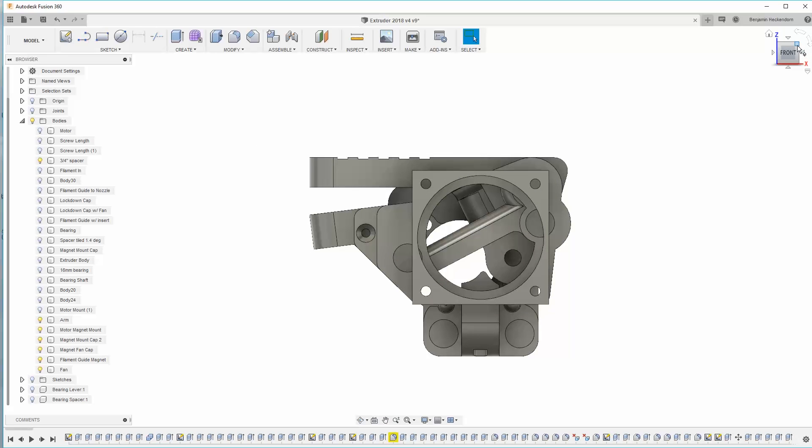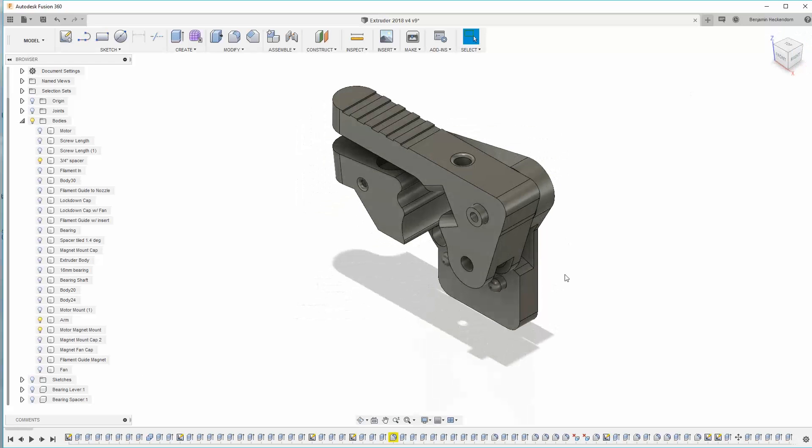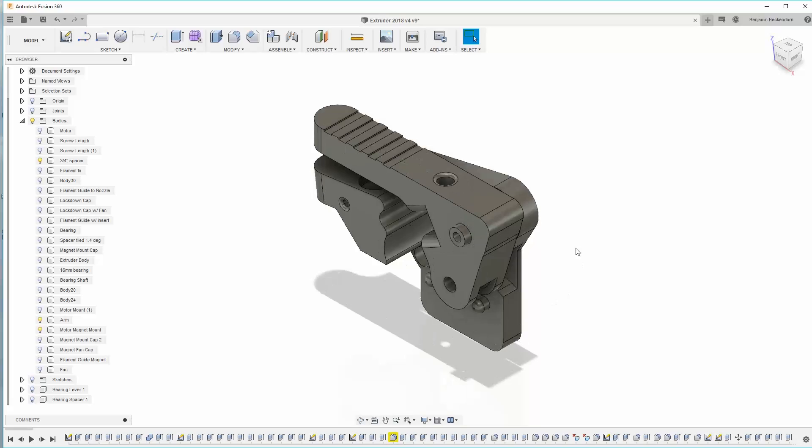And if it does jam you can pretty much disassemble most of this just by pulling the pieces apart magnetically. So that's the basic design. Let's get this printed and start assembling it.